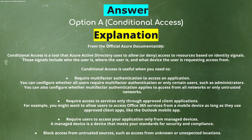Conditional Access is useful when you need to: 1) Require multi-factor authentication to access an application — you can configure whether all users or only certain users such as administrators require MFA, and whether it applies to all networks or only untrusted networks. 2) Require access to services only through approved client applications, such as the Outlook mobile app for Office 365. 3) Require users to access your application only from managed devices that meet your security and compliance standards. 4) Block access from untrusted sources such as unknown or unexpected locations.